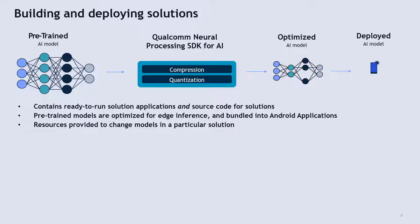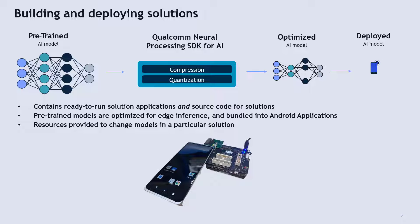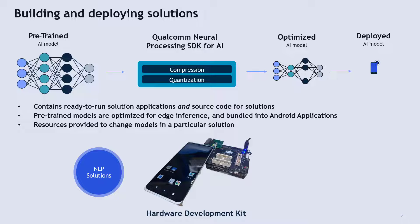This kit also provides resources to change models if the user chooses to in a particular solution. The target hardware to run these solutions is HDK, that is Hardware Development Kit. The solutions are divided into two categories: NLP solutions and Vision solutions.